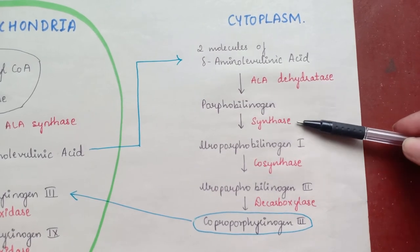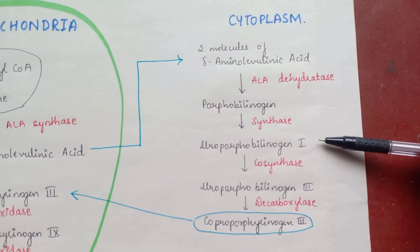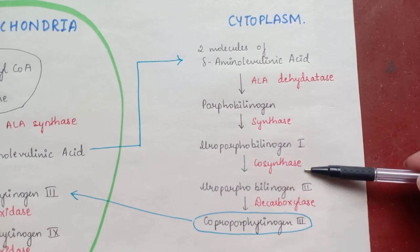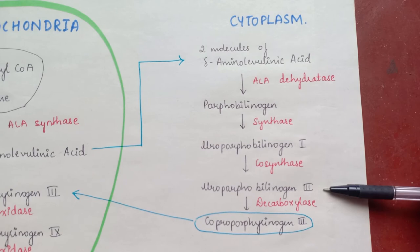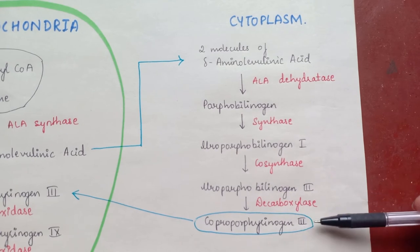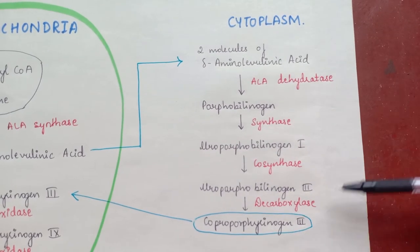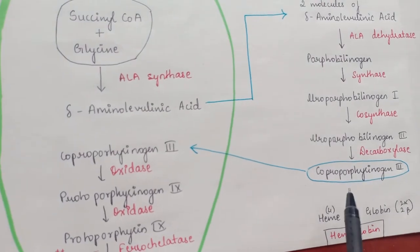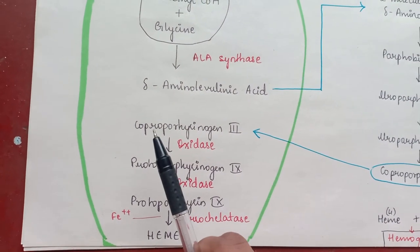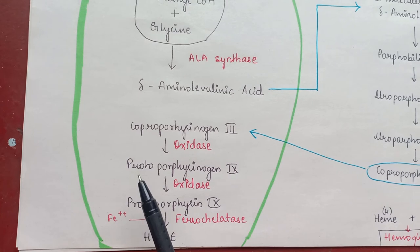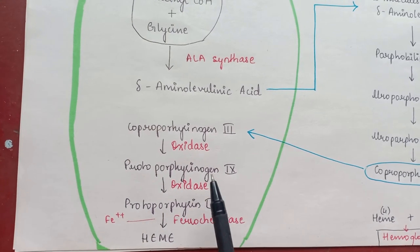This by-product enters the cytoplasm, where two molecules of delta-aminolevulinic acid in the presence of ALA dehydratase form porphobilinogen. Porphobilinogen in the presence of synthetase forms uroporphobilinogen 1, which in the presence of co-synthetase forms uroporphobilinogen 3. This in the presence of decarboxylase forms coproporphyrinogen 3, which then re-enters the mitochondria where oxidase converts it to protoporphyrinogen 9 and subsequently to protoporphyrin 9.